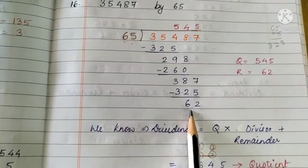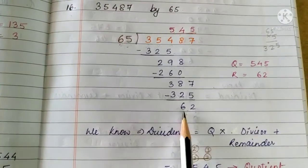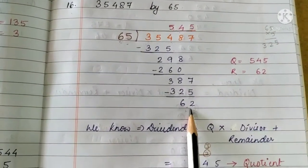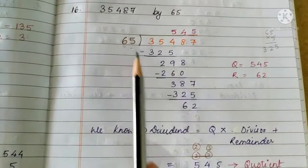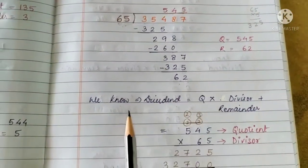Children, till the time the remainder is smaller than the divisor, your division is complete. That means the division has ended here. Now, how to check the answer, children?